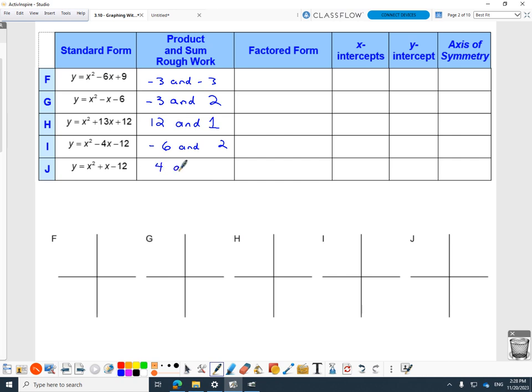Negative 4 and positive 3. 4 and negative 3 adds to 1, multiplies to negative 12. That's the whole game. You can find those two numbers, then you can jump right to factor form. Once you have those, you jump right to the factors.